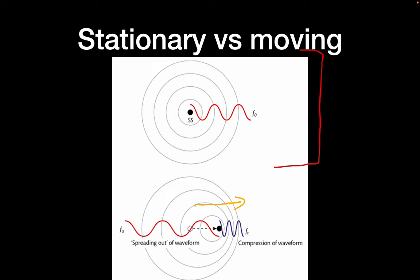Everyone knows the example of an ambulance siren coming towards you — you get a higher and higher pitch, meaning the frequency goes up. Then when it passes you and goes away, you get a lower and lower pitch, meaning the frequency drops. This is the Doppler effect: changing frequency in terms of a moving sound source or a moving object.